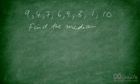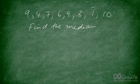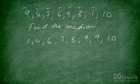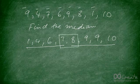Again, step one is to arrange the data in ascending order. So we have: 1, 4, 6, 7, 8, 9, 9, 10. When you look at this data, we actually have no single middle term — there are four terms on the left and four terms on the right, so we have two terms in the middle.